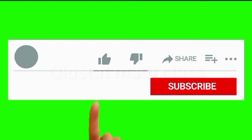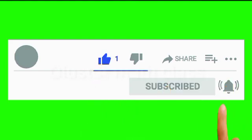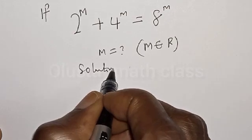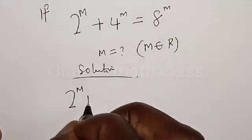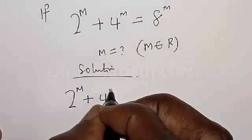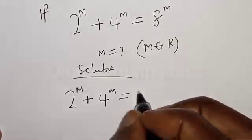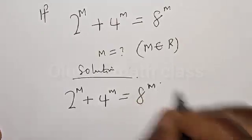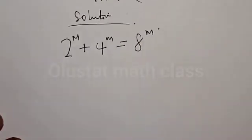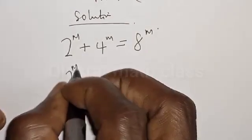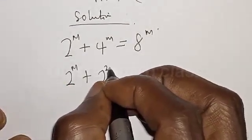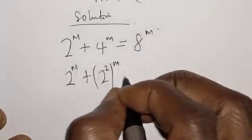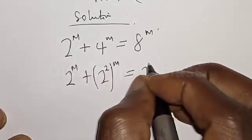Solution: we have the given equation 2 raised to power m plus 4 raised to power m is equal to 8 raised to power m. This can be expressed as 2 raised to power m plus 2 squared raised to power m is equal to 2 cubed raised to power m.